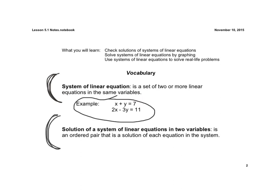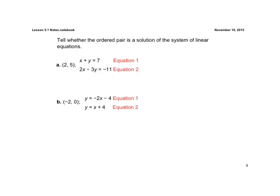The solution of a system of linear equations in two variables is an ordered pair that is a solution to each equation in the system. As we go through the video, you'll learn more about what a system is and what the solution is. A solution to a system of linear equations is an ordered pair that makes both equations true.